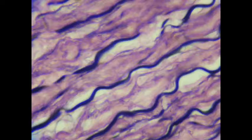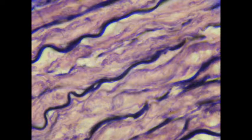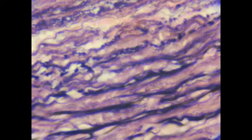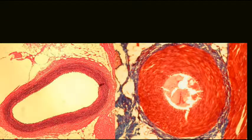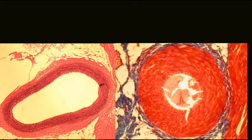This elastic connective tissue can be found in ligaments connecting neighboring vertebrae and be present in the large arteries, which are actually called elastic arteries.